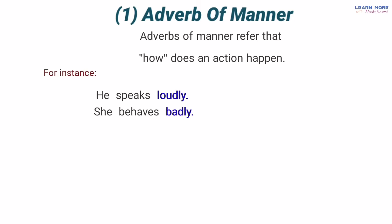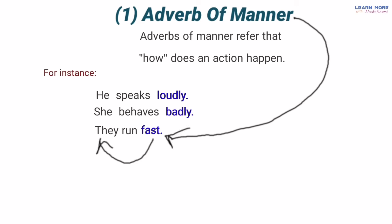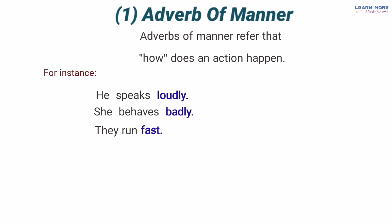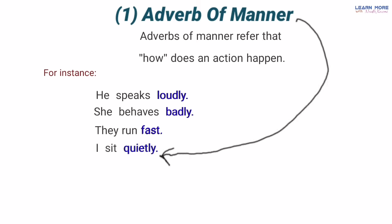'How do they run?' — woh kaise daurte hain? 'They run fast' — woh tez daurte hain. Ab jo word 'fast' hai yeh bhi ek adverb of manner hai kyunke yeh unke andaaz, yani manner ke baare mein humein bata raha hai ke yeh jo kaam karte hain woh kis tarah karte hain — how? Fast. 'How do you sit in the classroom?' — aap classroom mein kaise baithte ho? 'I sit quietly' — main khamoshi se baithta hoon. Ab jo word 'quietly' hai yeh bhi ek adverb of manner hai kyunke yeh mere andaaz ke baare mein bata raha hai ke main kaise class mein baithta hoon — quietly, khamoshi se.